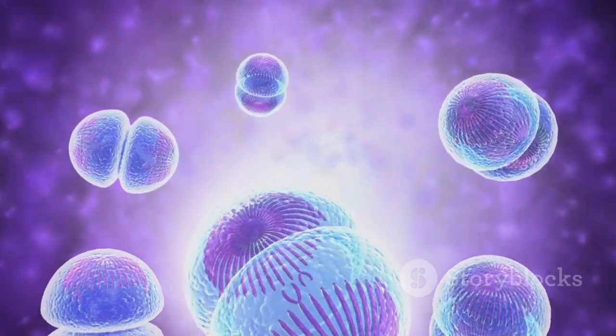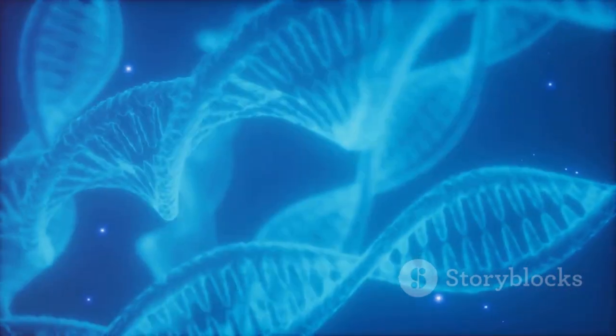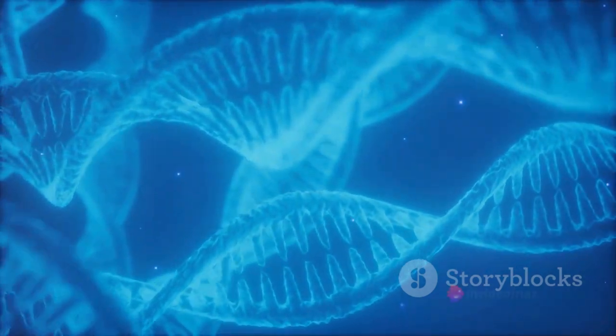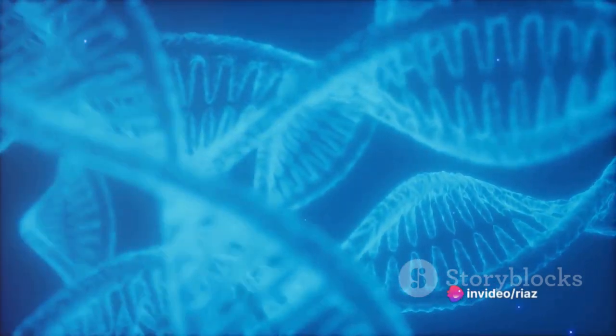Each chromosome arm ends in a region called the telomere. Picture them as the aglets on your shoelaces, preventing the chromosome from fraying or sticking to other chromosomes.